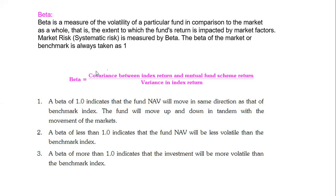Beta of less than 1 indicates that the fund NAV will be less volatile than the benchmark index. If beta is less than 1, it means that our stock LNT is not going up as much as the benchmark is going up. So it is less volatile.